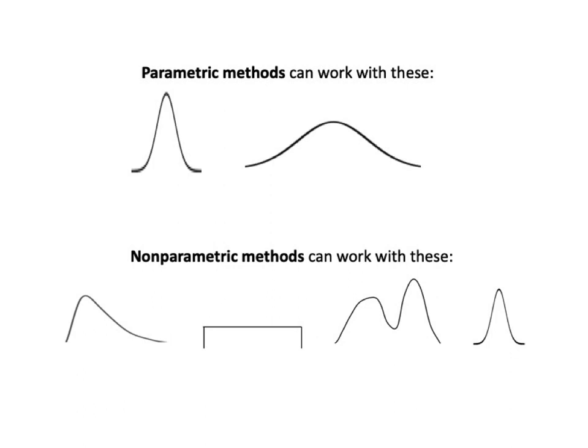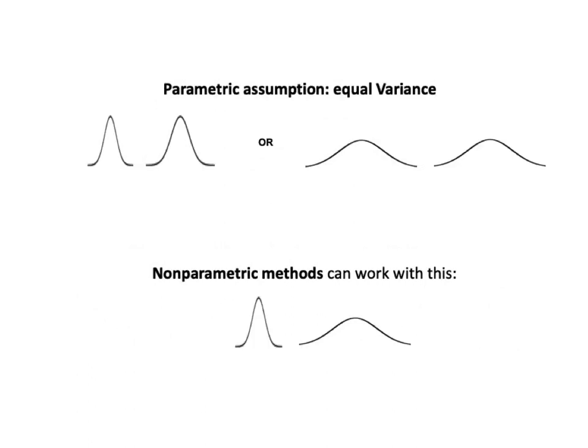Nonparametrics can work with data no matter how weird the shape of the distribution, even things like that shown here. Parametric methods, which use two or more samples from two different populations or processes, usually assume roughly equal variance. Nonparametric methods don't. Nonparametric methods are often called distribution-free because they are freed from any assumptions about the source distributions.